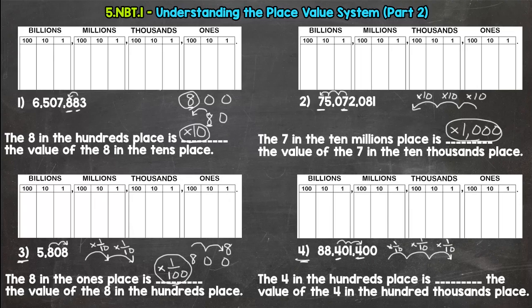And each jump to the right as we decrease in value is 1 tenth. So 1 tenth times 1 tenth times 1 tenth is not 1 thirtieth. 10 times 10 times 10 is 1,000. So let's read it back. The 4 in the hundreds place is 1 thousandth the value of the 4 in the hundred thousands place. Hundred thousands place.